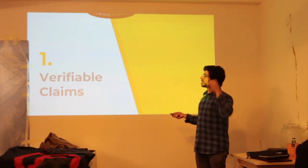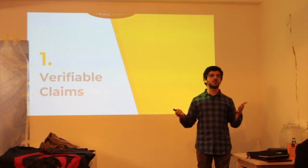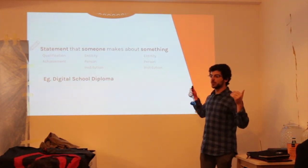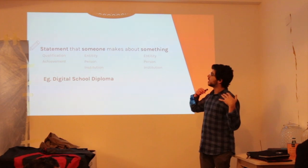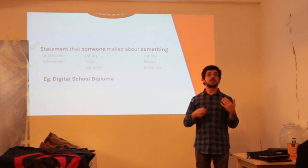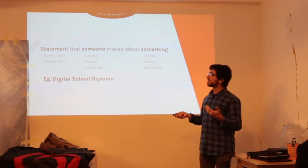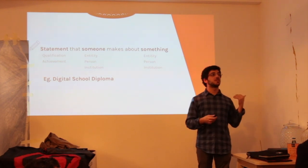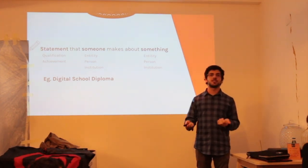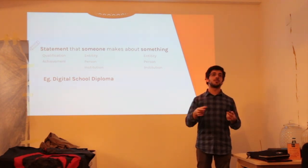Verifiable Claims are a specification being worked on by a W3C working group, and the goal is to find a way to make statements about some entity. Those statements are verifiable, portable, and reputable. A statement can be a qualification or achievement — for instance, a university that gives a degree and signs that diploma with its private key. Or it can be like a government issuing a statement that you are over 18.